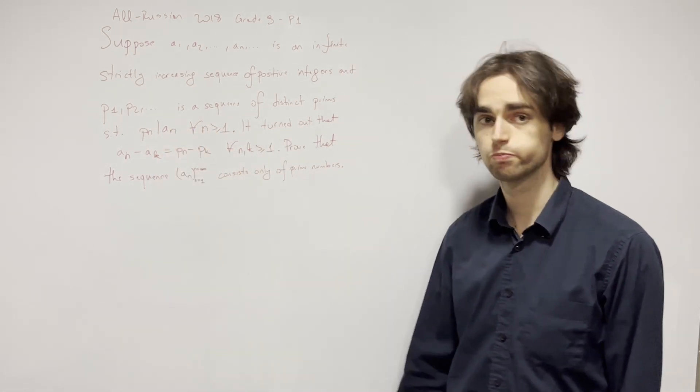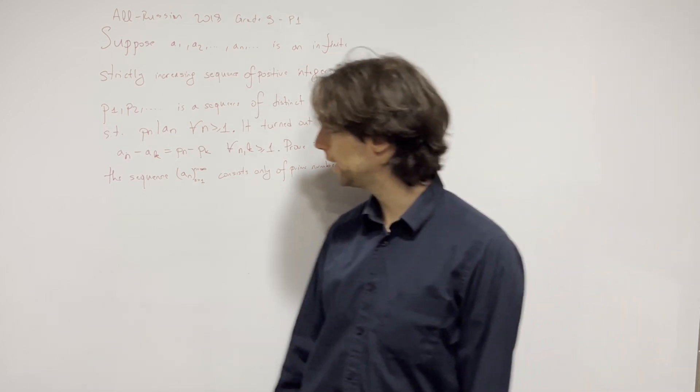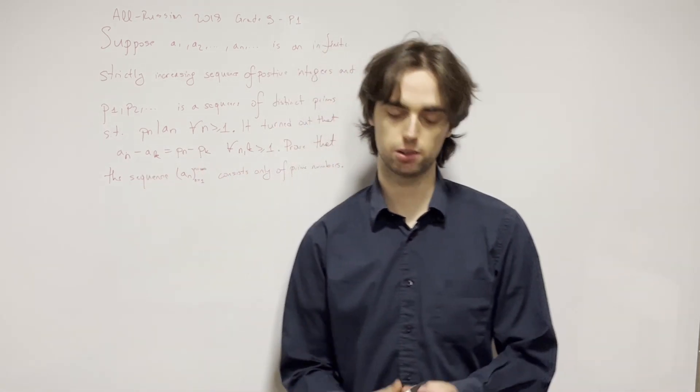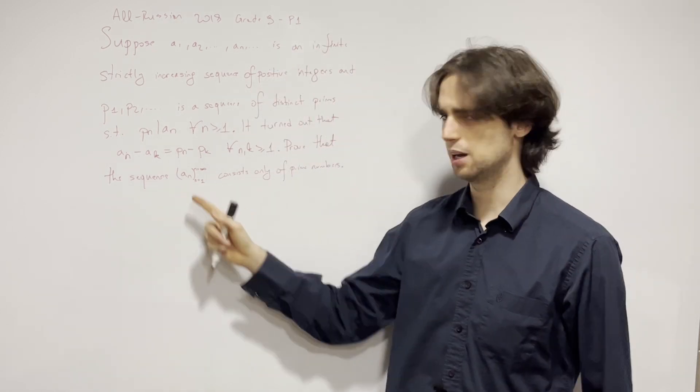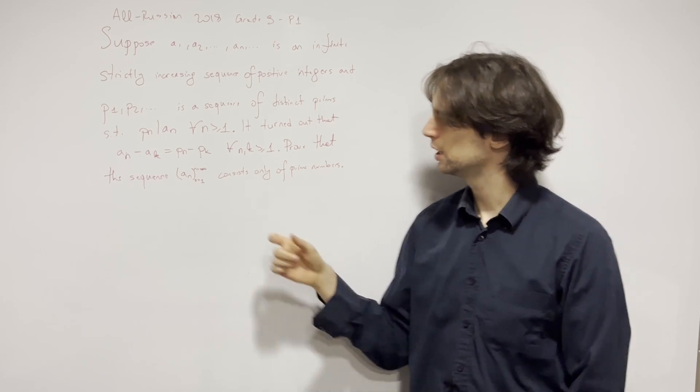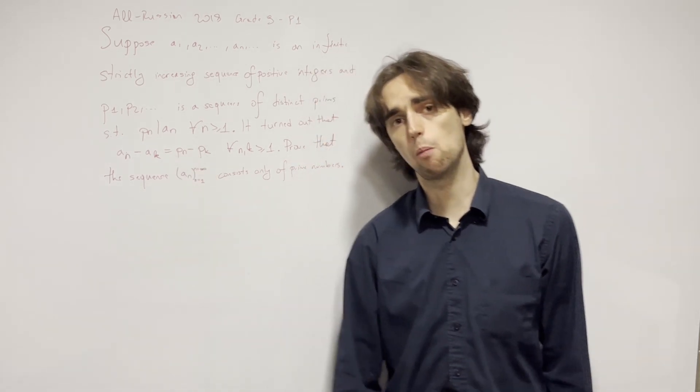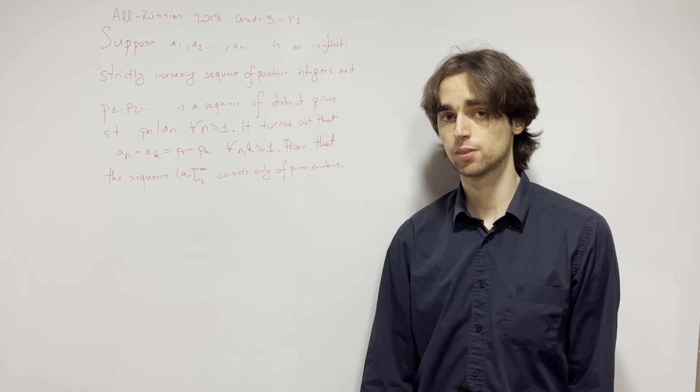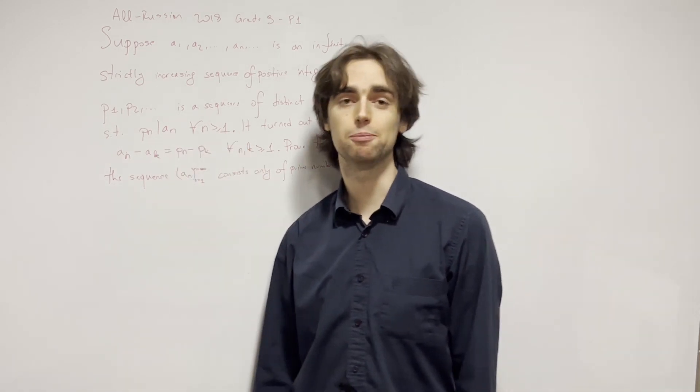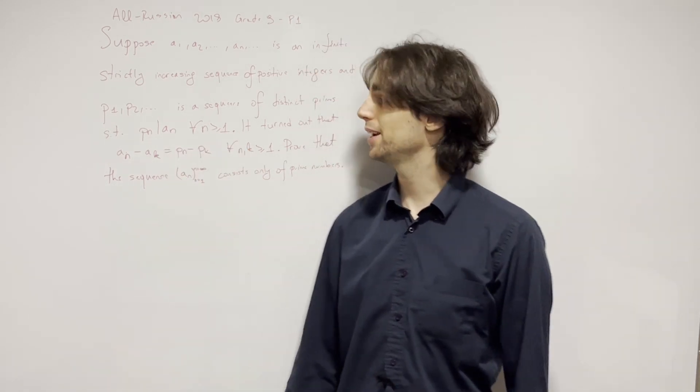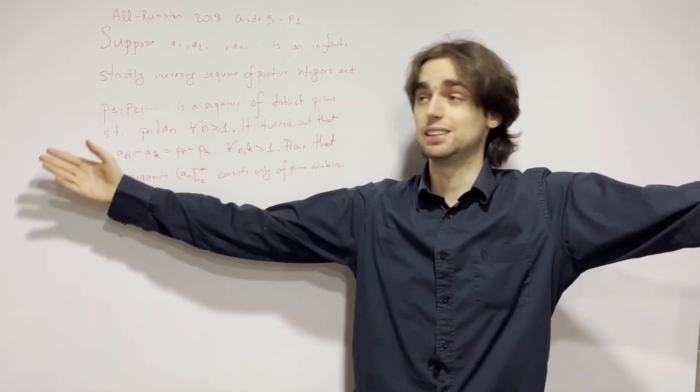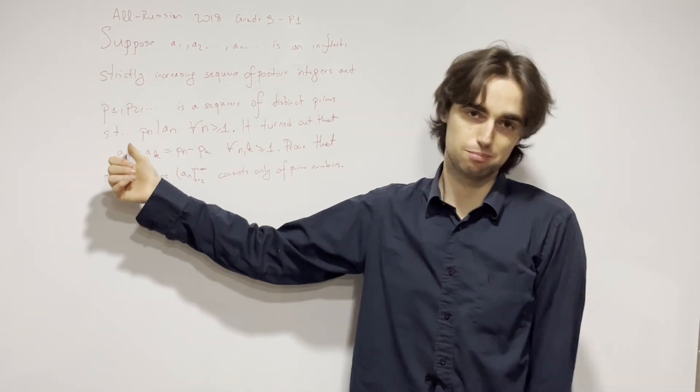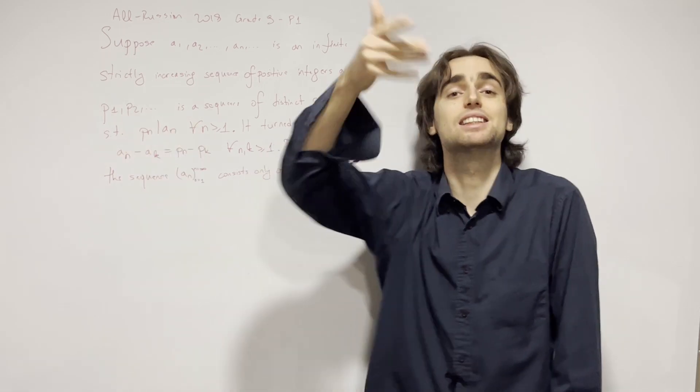Let's look at this condition. These two conditions: p_n divides a_n, and this thing right here. So wait a second, if this sequence consists only of primes, we can go at it backwards. Then what is a_n going to be? a_n is going to be p_n, right?